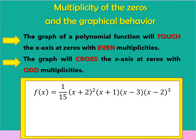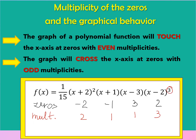For example, we have function f(x). The zeros of this function are negative 2, negative 1, 3, and 2. The multiplicity of each zero is 2, 1, 1, and 3 respectively. Remember, multiplicity is the value of the exponent of the zeros.